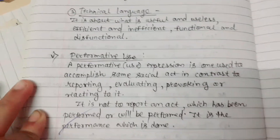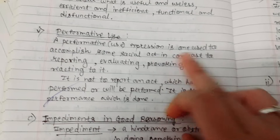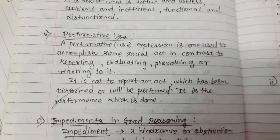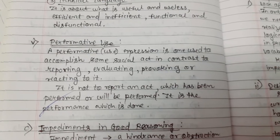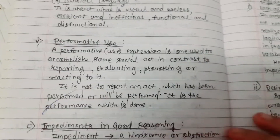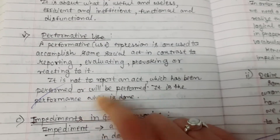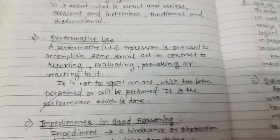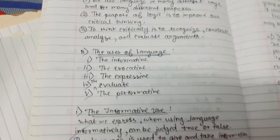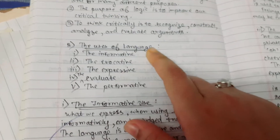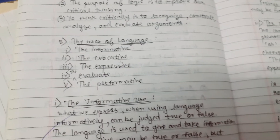The fifth is performative use. A performative expression is one used to accomplish some social act — contracting, reporting, evaluating, provoking, or reacting to it. It is not to report an act which has been or will be performed; it is a performance which is done. So here we have seen the five uses of language: informative, evocative, expressive, evaluative, and performative.